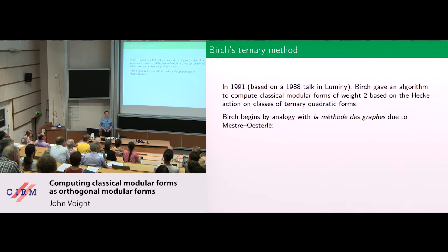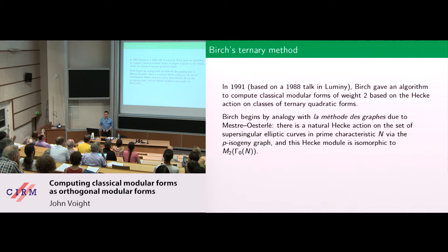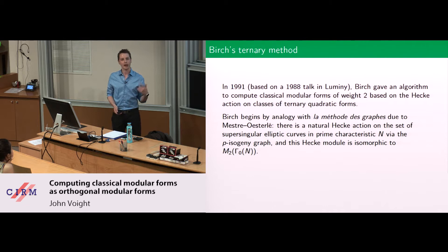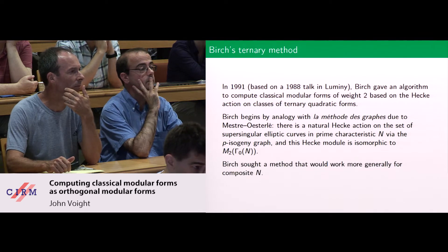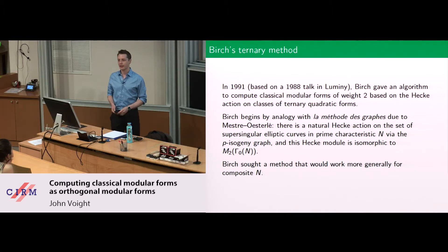This method is due to Mestre and Osterlé, and its executive summary goes like this. There's a natural Hecke action on the set of supersingular elliptic curves in prime characteristic N via the p-isogeny graph, if you want the Hecke operator at p. If you look at what this Hecke module is — you equip a vector space with a bunch of commuting operators — you end up with the modular forms of weight 2 for gamma-0 N.